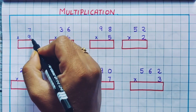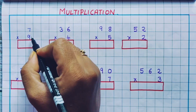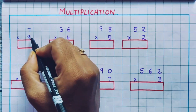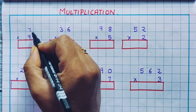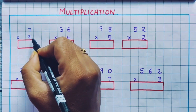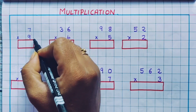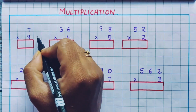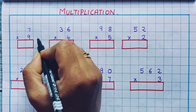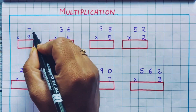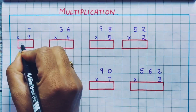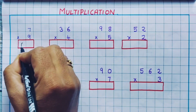7 into 9. We are going to say the table of 9. 9 7s are how much? Let's say the table of 9: 9 1s are 9, 9 2s are 18, 9 3s are 27, 9 4s are 36, 9 5s are 45, 9 6s are 54, 9 7s are 63. So the answer is 63.